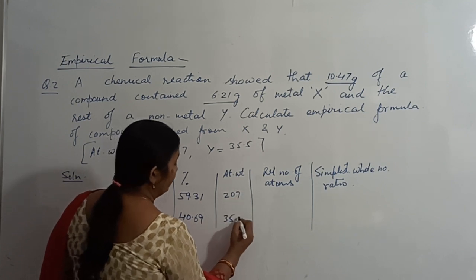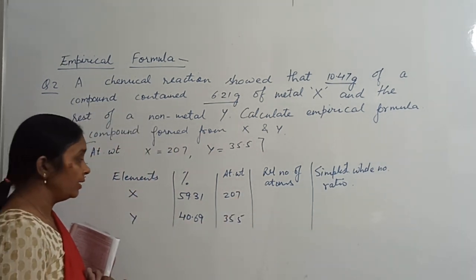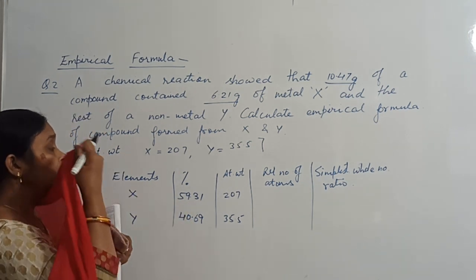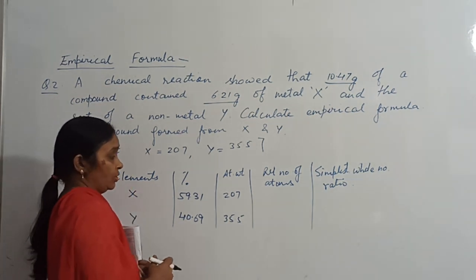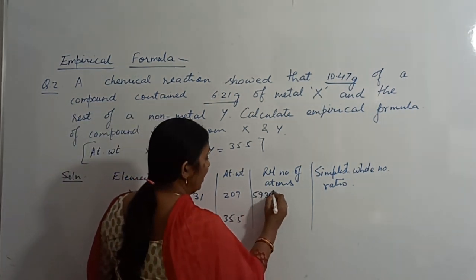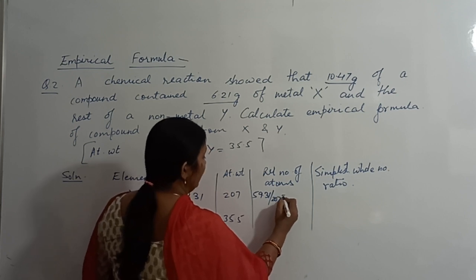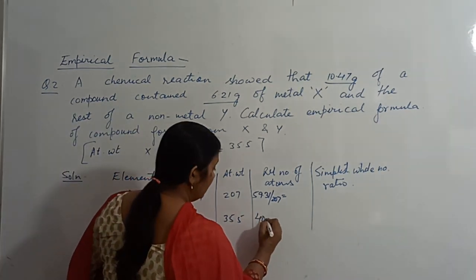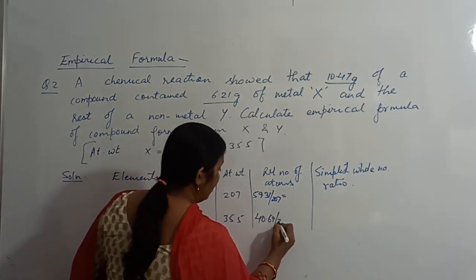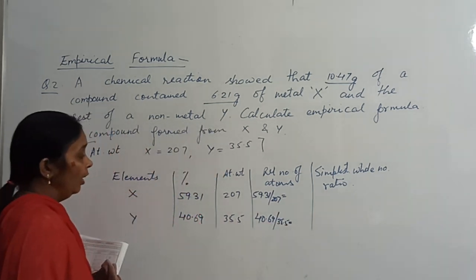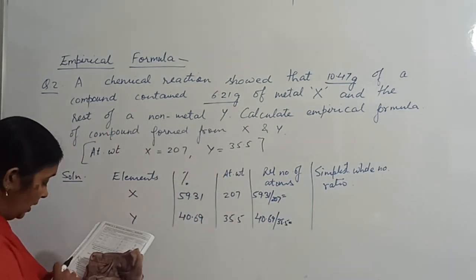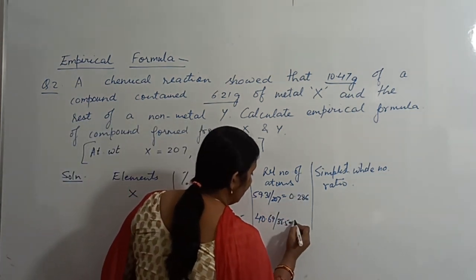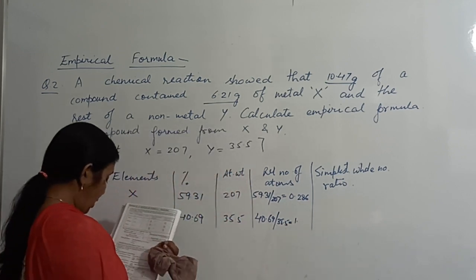Now what do we do to find out relative number of atoms? We divide the percentage of the element by atomic weight. So 59.31 divided by 207, and the weight percentage of Y is 40.69 divided by atomic weight of Y that is 35.5. After calculating, it will come as 0.286 and this will come as 1.146.